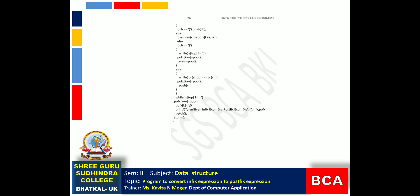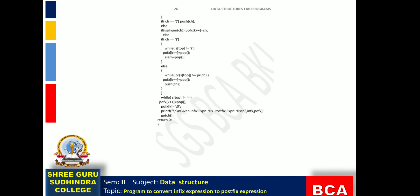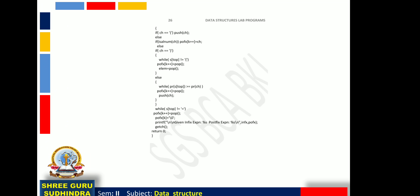At the end, a final while loop pops everything remaining in the stack (while s[top] is not equal to '='), adding each to postfix. Then postfix[k] is set to null. Finally, the printf statement prints the original infix expression and the resulting postfix expression as output.